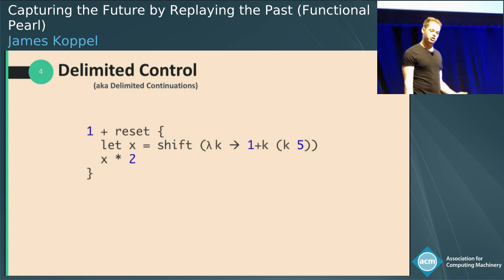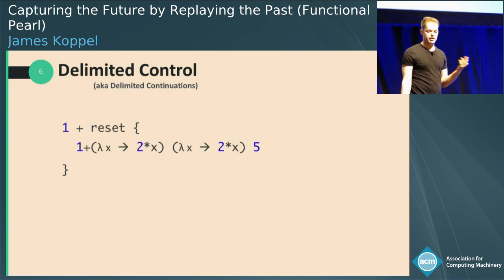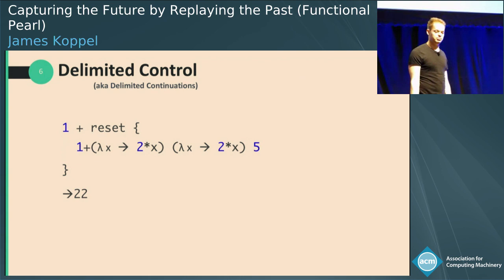Another effect, a bit trickier, is delimited control or delimited continuation. The way this works — I want you to focus on that shift statement and then think about the stuff that happens after. It multiplies the result by two. So what shift does is it takes that stuff that happens after, multiplies it by two, and moves it inside the body. So here that happens twice, so we do that multiplication by two twice. And so the reset block returns 21 and the entire expression returns 22. This may sound like a bit of an obscure esoteric effect, but it's actually quite useful.